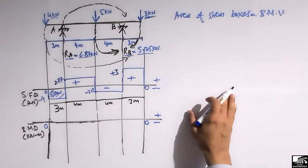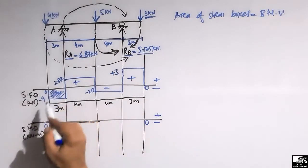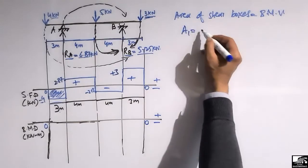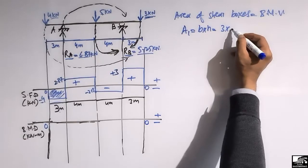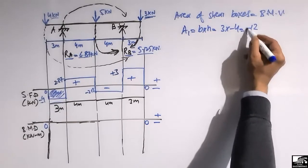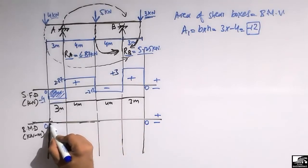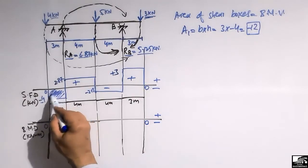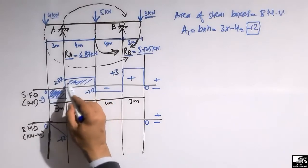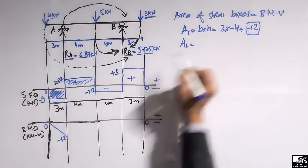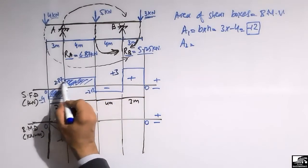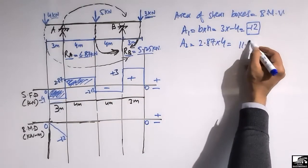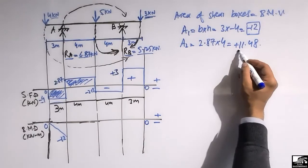The first shear box is a rectangle with height −4 and base 3 m, so its area is −12 kN·m — this is the bending moment at that point. The second box is positive with height +2.87 and base 4 m, giving an area of +11.48 kN·m.